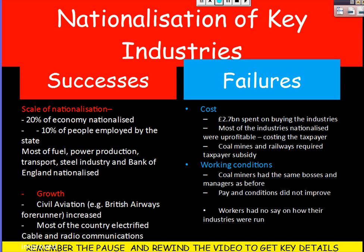The next issue was nationalising the key industries. There were great successes — the scale was incredible. 20% of the economy was nationalised, meaning 10% of people, around 5 million, were employed by the state. Most fuel, power, production, transport, the steel industry, and the Bank of England were all nationalised. This led to big growth — British Airways (BOAC) massively increased, most of the country was electrified, and cable and radio communications were improved.